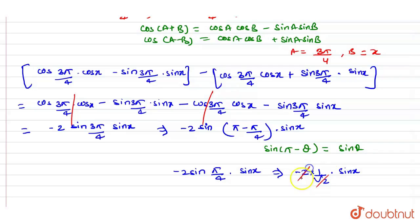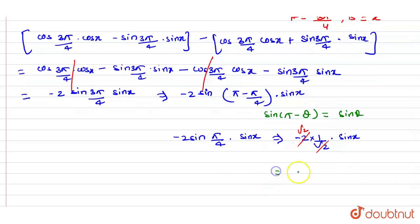So minus 2 will be cancelled out with root 2 and leave root 2. So now it will be minus of root 2 sin x.